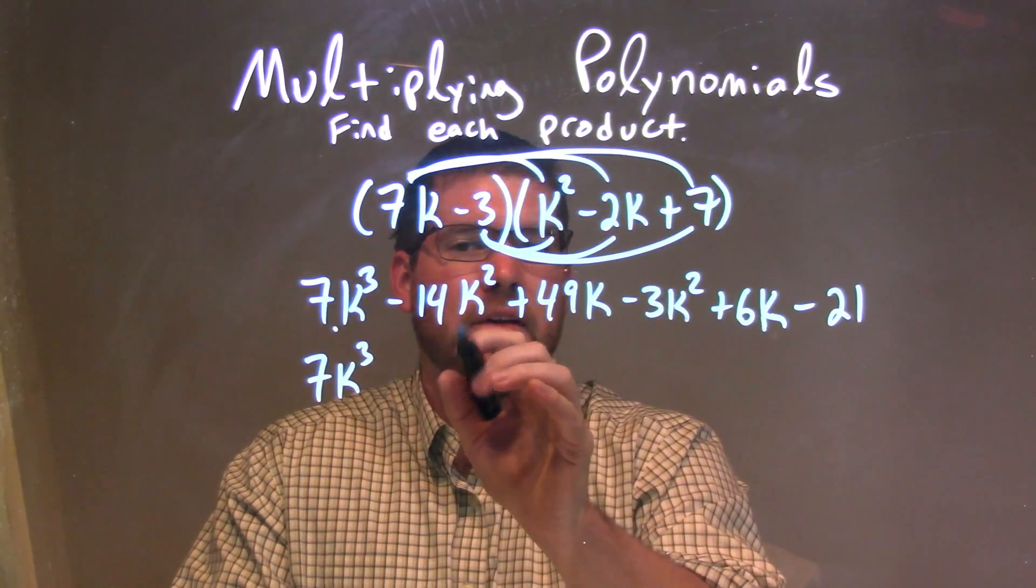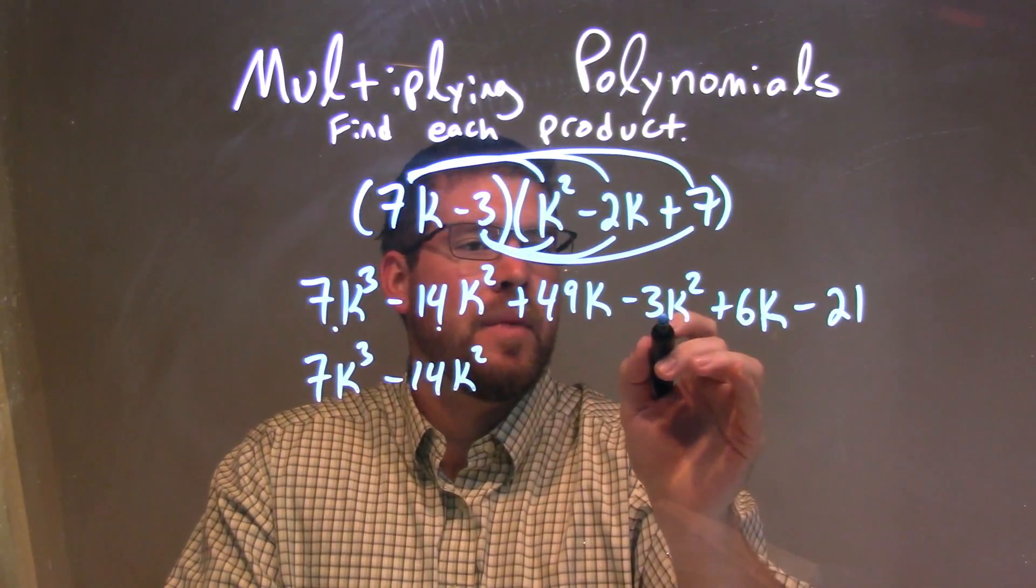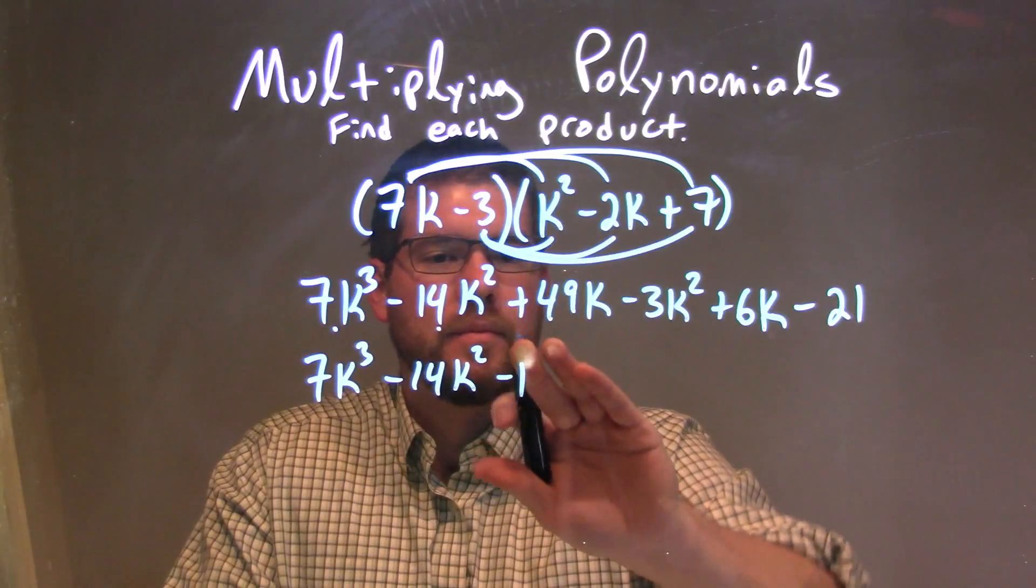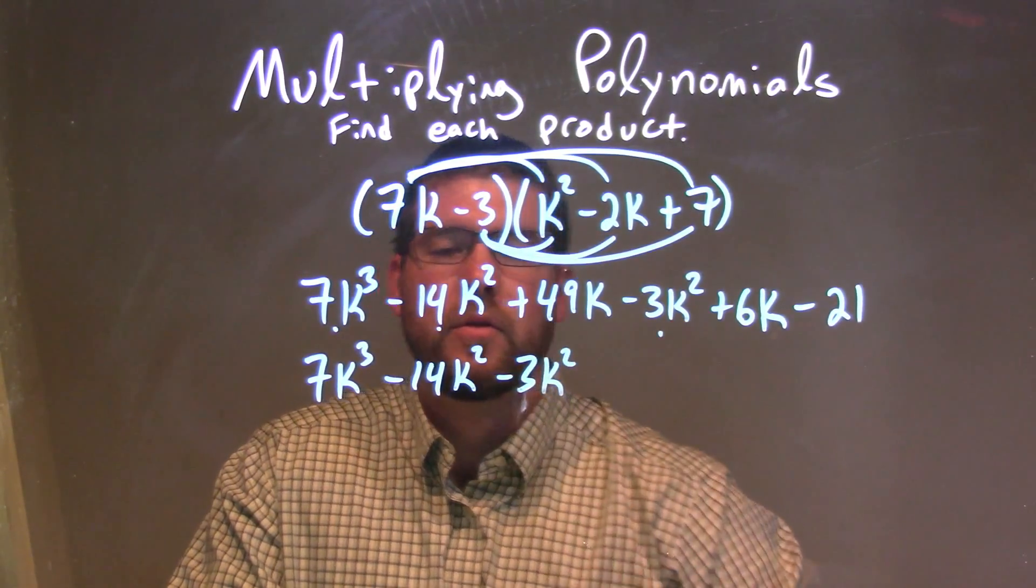Next are the k squared terms, so we have minus 14k squared and minus 3k squared.